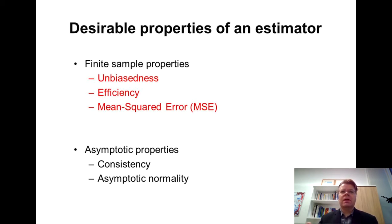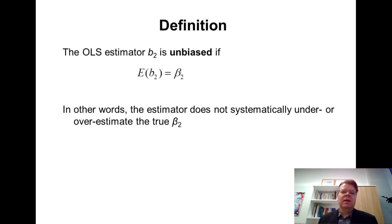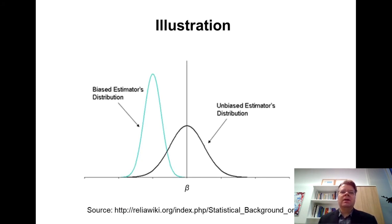Let's start from unbiasedness. The OLS estimator is unbiased if the expected value of the estimator is equal to its true value. I will focus on the single regression case and on the slope coefficient B2, which is the estimator of the true slope coefficient beta 2. Unbiasedness is important to ensure the estimator doesn't systematically underestimate or overestimate the true parameter value.